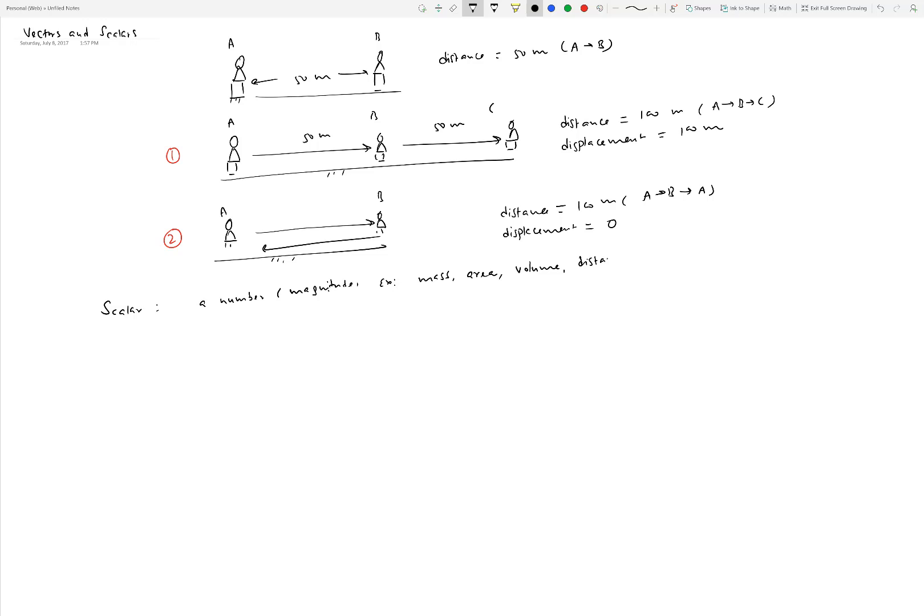Distance traveled by a person or car, like 1 kilometer, is a scalar. Other examples include density, work done by a force, and energy in a system. These are scalar quantities requiring only one number.